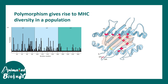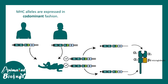Pathogens are evolving all the time, creating diversity. It's a constant battle — how can our body's immune system also bring in diversity? This polymorphism is one of the ways by which MHC diversity is orchestrated. Another important feature of MHC alleles is their codominant expression, meaning alleles from both mother and father are active.